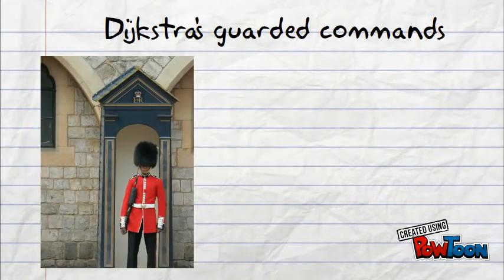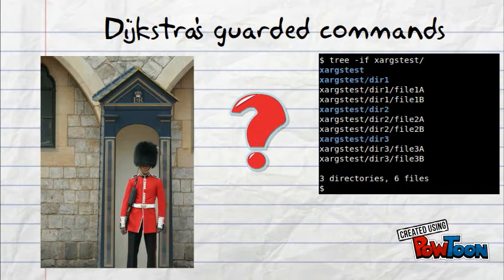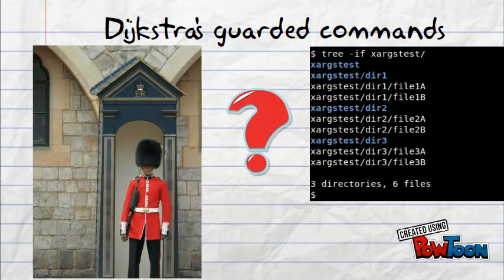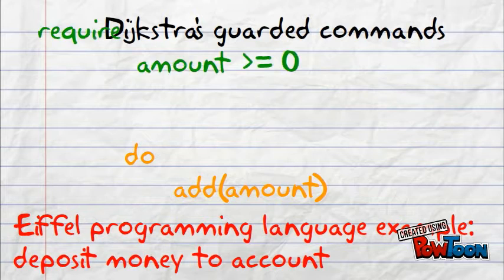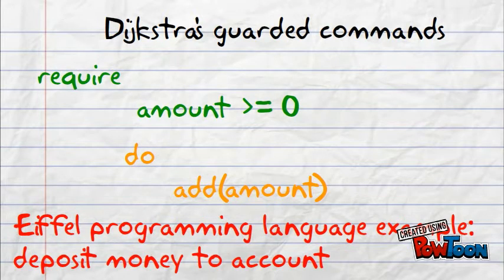Also, we need to know what a guarded command is. A guarded command is a normal command program statement preceded by a guard, which is a boolean expression. The statement is only executed if the boolean guard evaluates to true. The concept of guarded command was later further developed as well-known today preconditions.